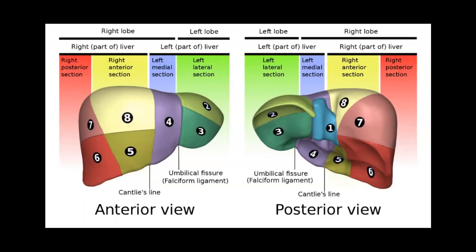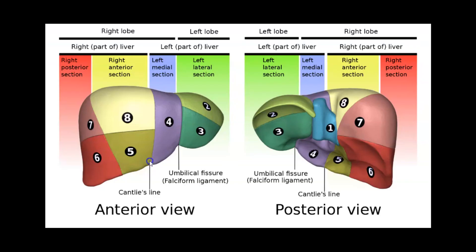Quick recap: in standard ultrasound we separate left lobe and right lobe using the falciform ligament. With Couinaud anatomy we separate into left hemiliver and right hemiliver using Cantley's line, or the middle hepatic vein, main lobar fissure, and gallbladder. A posterior review shows the caudate lobe as segment 1.